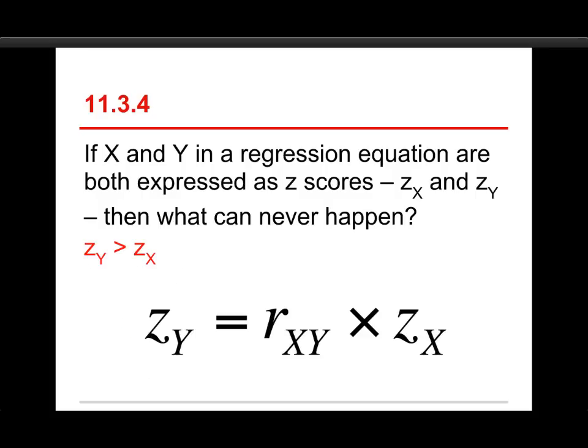And it has to do with the regression to the mean thing, which is best explained through the Z score version of the regression equation. And we've got Z sub X on the far right. Those are the predictors. Those are based on the variable X, but they're standardized. And we're trying to predict the Z scores on Y. But the thing in between, the thing that we multiply the Z sub X by is the correlation between the two. And because correlations can never be greater than 1, plus 1 or minus 1, then the resulting Z score can never have a greater value than the original Z score.